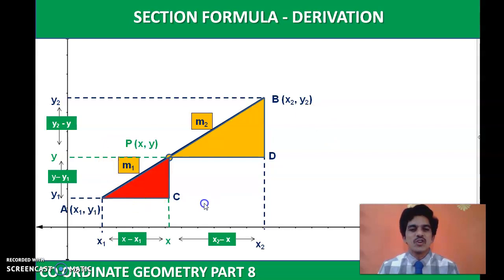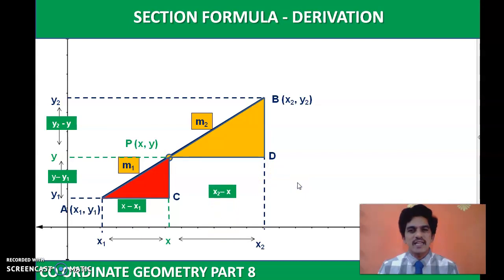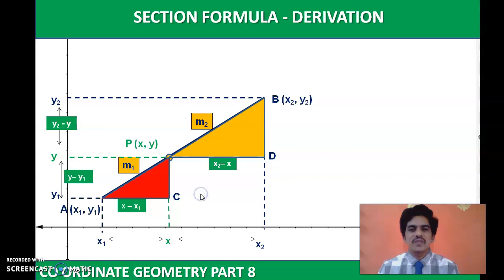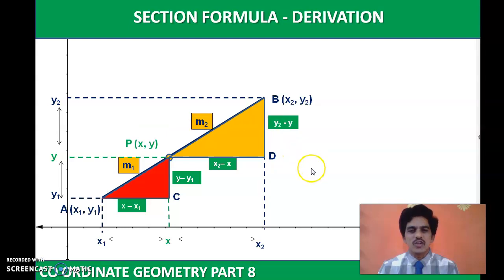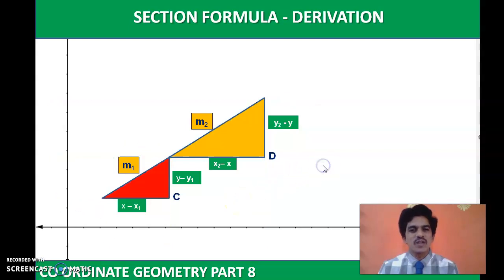As you can see, the distance from A to C is equal to x minus x1, and from P to D is x2 minus x. The distance CP is y minus y1, and PD is y2 minus y. So AC equals x minus x1, CP equals y minus y1, PD equals x2 minus x, and DB equals y2 minus y. Pause for 2 to 3 seconds to get these distances clear before resuming.